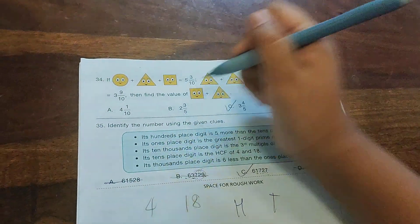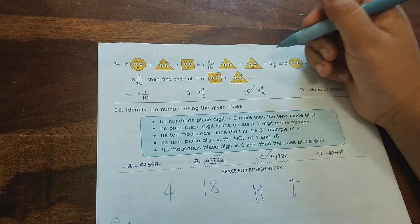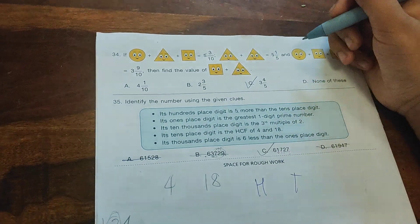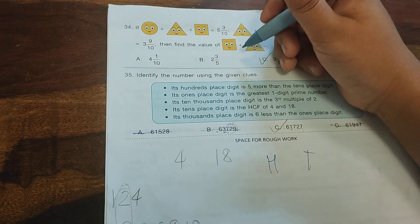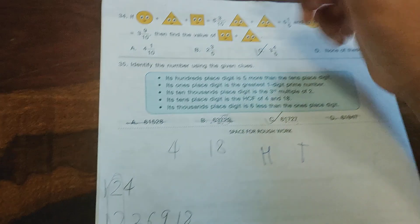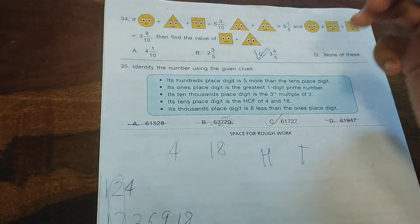If circle + triangle + square equals 5,310, triangle + triangle equals 1,510, and circle + square + square equals 3,910, then find the value of square minus triangle. The answer is option 3,450, which is the correct answer.